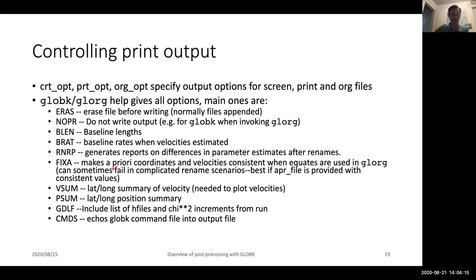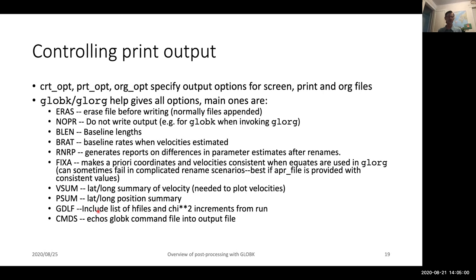In terms of controlling the output of GLOBE-K, there are three-character OPT commands that specify specifically what you want to do. ERASE is a four-character string. NOPR is no-print, which we often use for the CRT option and the print option. BLEN will print out the baseline lengths — useful sometimes in the print file because the baseline length should be well determined even if no constraints are applied. BRAT is the baseline rates of change. It's important to remember that these can get very large outputs when you have large numbers of stations. The RNRP command generates reports on renames, and particularly if you're doing a forward GLOBE-K solution, it'll tell you the change in position at a rename and calculate the uncertainty on that change based on the full variance-covariance matrix.